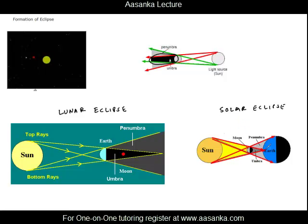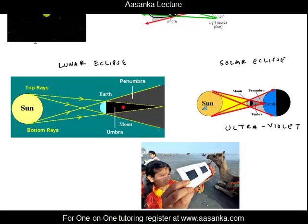Under no circumstances should you see a Solar Eclipse by naked eye or even by dark glasses. You need special coating glass or special films to see a Solar Eclipse. Because in this period, though visible rays do not reach Earth, there are ultraviolet rays which reach Earth and therefore can damage your eyes. So you have to be very careful with this. Here in this image you see a child actually seeing a Solar Eclipse with proper protection. This is a special film which can block ultraviolet rays and therefore the eyes of this child will not be affected.